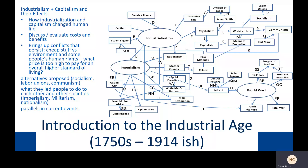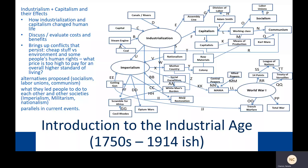In 1750, most people in Europe lived on small farms and produced most of what they needed by hand. A century later, many people lived in cities and most of their needs were produced by complex machines using steam power. The industrial revolution describes this change. It began in Great Britain, then spread to Belgium, France, Germany, the United States, and Japan.